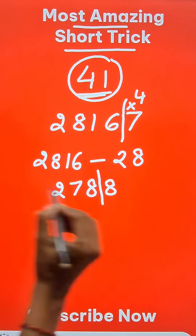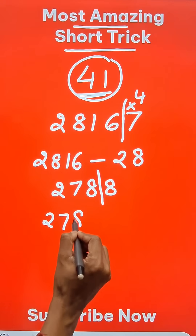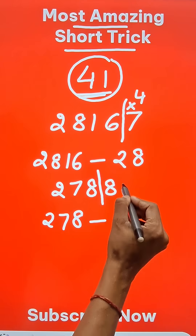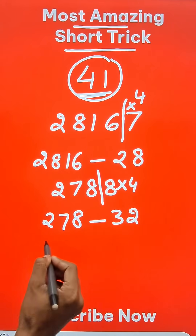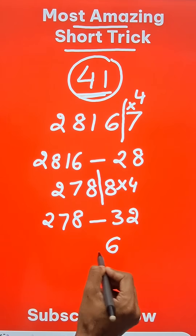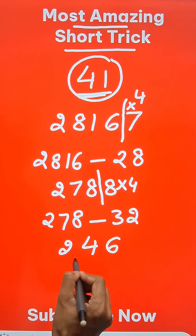I will separate out the unit digit: 278 minus 4 times 8, which is 32. That gives me 246.